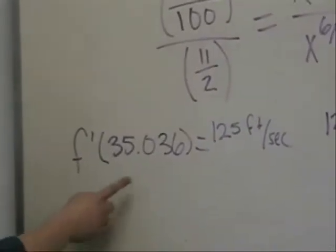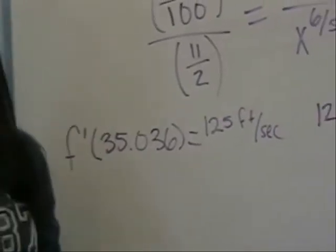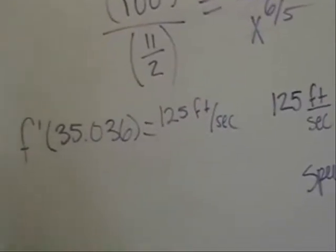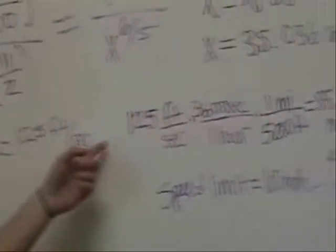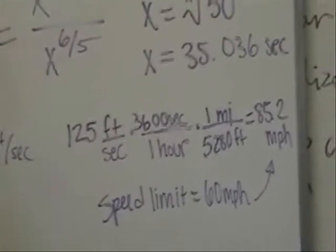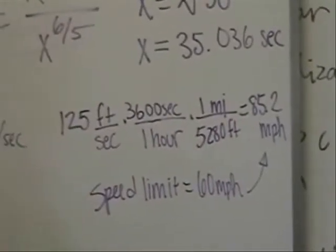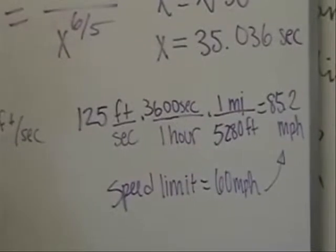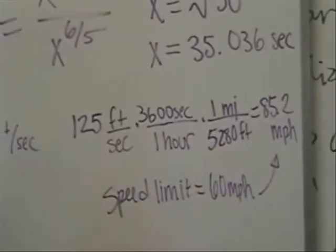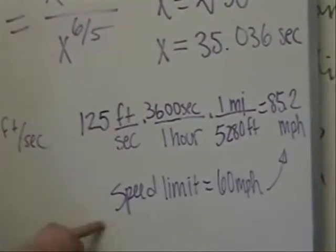So next we had to plug in this value of x into the function for velocity. And the y value that was yielded by just plugging this into x was 125 feet per second. Next we had to convert this 125 feet per second to miles per hour in order to compare it to the speed limit. And this was done by simple conversion since there's 3600 seconds in an hour and there's 5280 feet in a mile. And our final value for the driver's maximum speed was 85.2 miles per hour. However, the speed limit is 60 miles per hour.